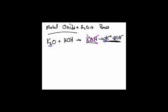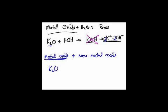A somewhat unusual case is when you have a metal oxide plus a non-metal oxide — that's Roman numeral V on your handout. Let's put the oxides together: a metal oxide like potassium oxide, K2O, and a non-metal oxide like carbon dioxide. The rule says it always makes a salt containing oxygen. You've got potassium, carbon, and oxygen — just squish them together. You're going to make K2CO3.